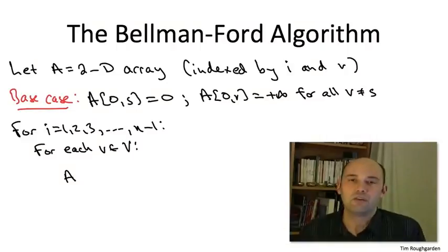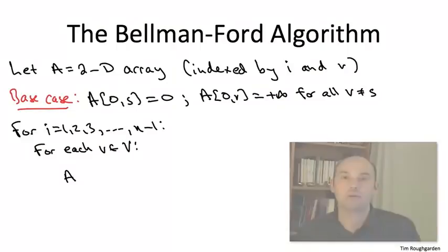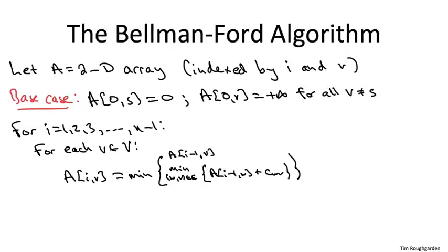For each choice of I and V, of course, we just write down in code the formula that we stated in the recurrence. So as I'm sure you recall, case one furnishes one possible candidate. It's always an option just to inherit the shortest path from S to V that you computed using only I minus one edges.